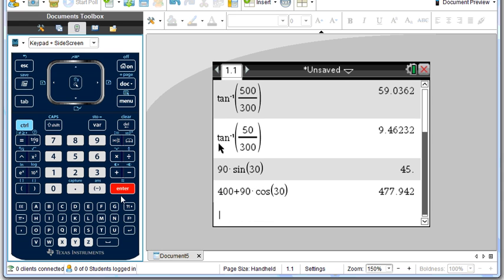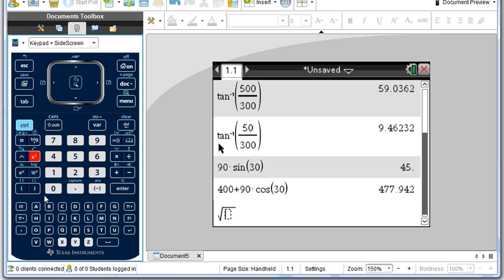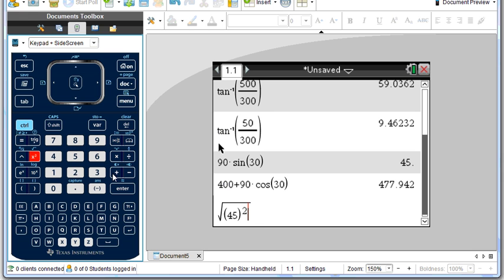So to find our ground speed, we'll take the square root. We're going to have 45 squared plus the previous answer squared.